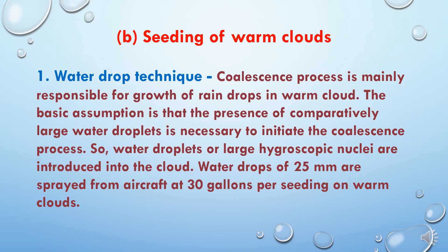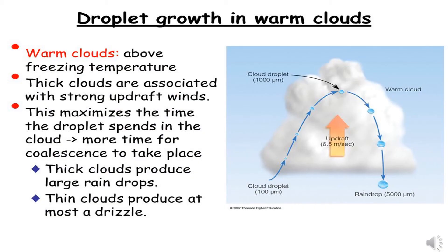Now we will study the second method: seeding of warm clouds. The first technique is the water drop technique. The coalescence process is mainly responsible for the growth of raindrops in warm clouds. The basic assumption is that the presence of comparatively large water droplets is necessary to initiate the coalescence process, so water droplets or large hygroscopic nuclei are introduced into the cloud. Water drops of 25 mm are spread from aircraft at 30 gallons per seeding on warm clouds. Warm clouds above freezing temperature with thick clouds are associated with strong updraft winds, maximizing the time the droplet spends in the cloud and allowing more coalescence. Thick clouds produce large raindrops, while thin clouds produce only drizzle.